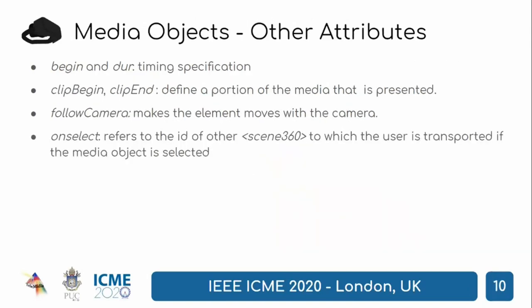For timing specification, we use smil-begin and dur attributes that define the start and duration of the specified media object. Clip-begin and clip-end define the portion of the source media that is presented. Follow-camera is a boolean attribute that, if true, makes the element move with the user's head motion. And on-select refers to the ID of another Scene360, so that when the user selects the media object with this attribute, he is transported to the referred Scene360, allowing navigation among different scenes.